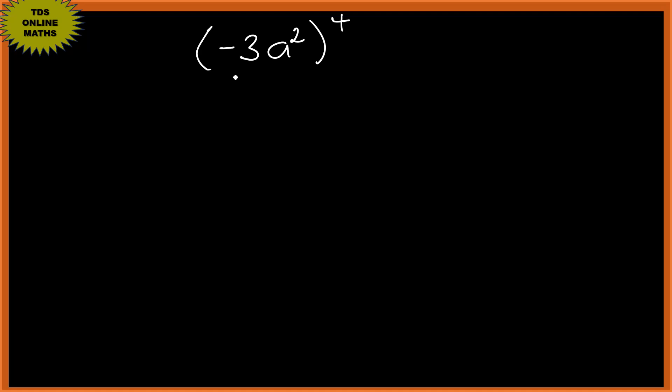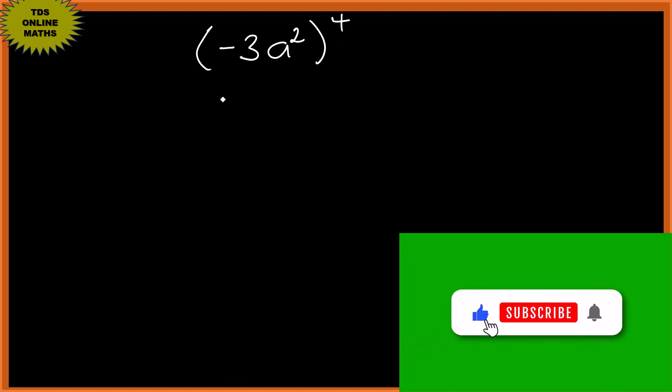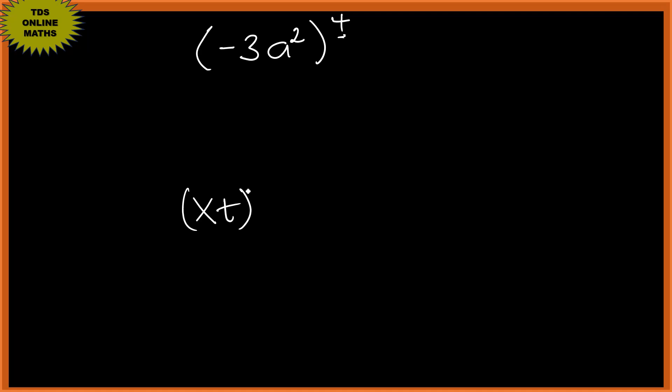Let's go ahead. This power is for everything. If you're given x t raised to m, it's the same as x raised to m times t raised to m. So this one can be written as negative 3 to the power 4 times